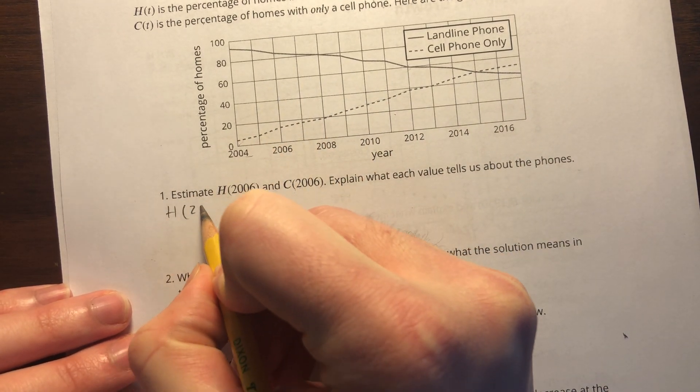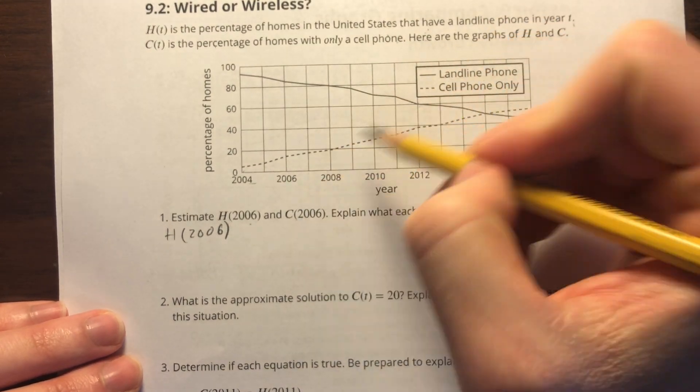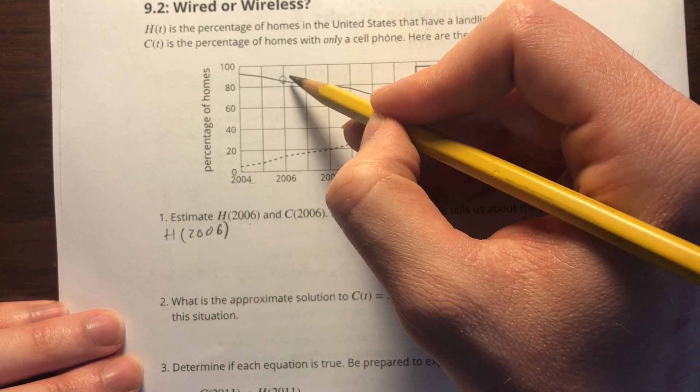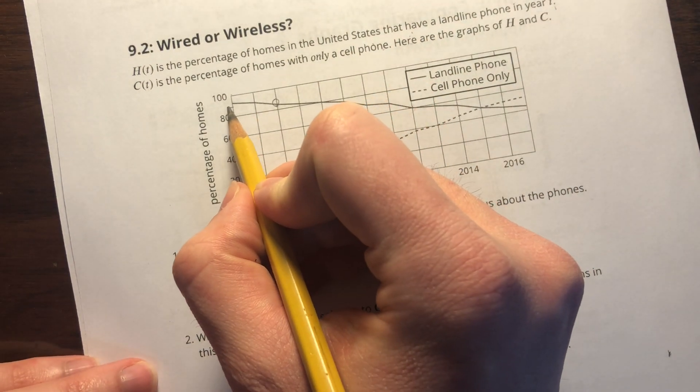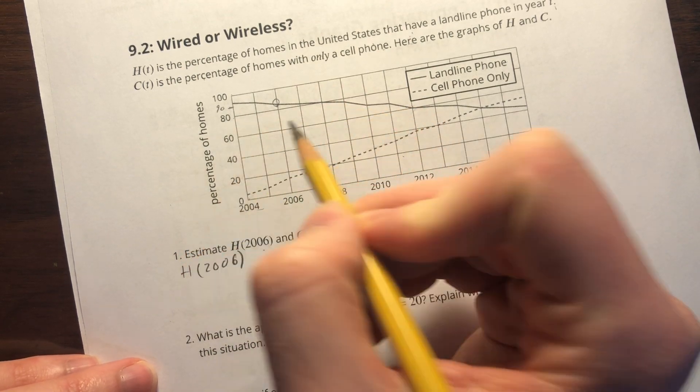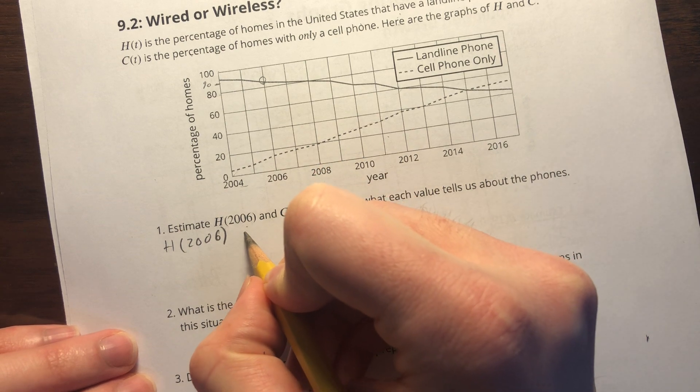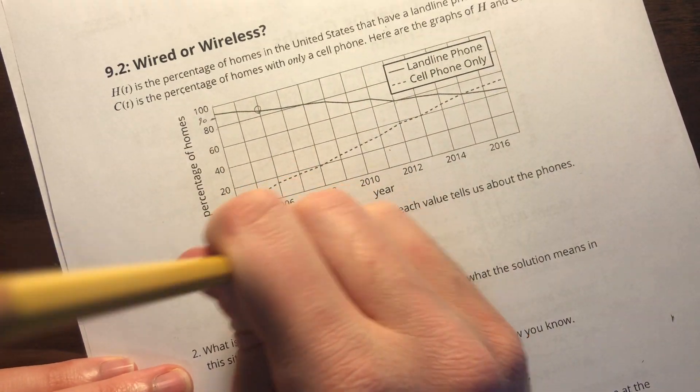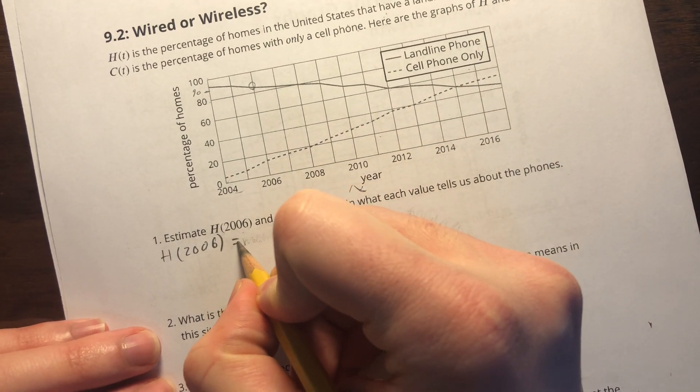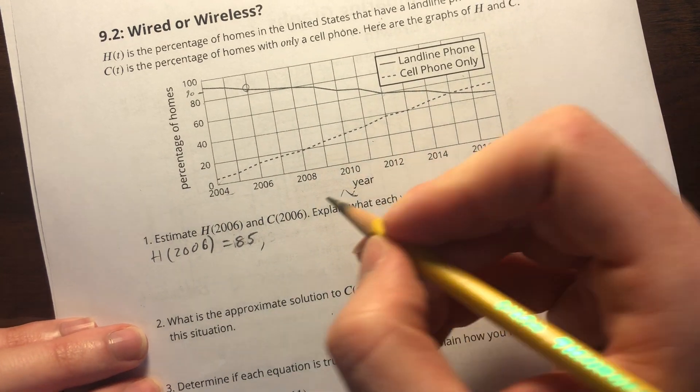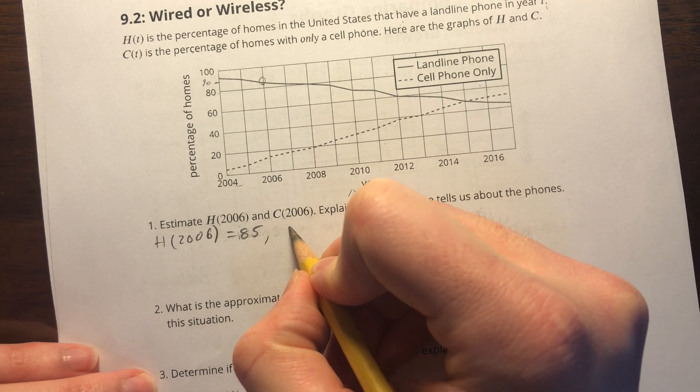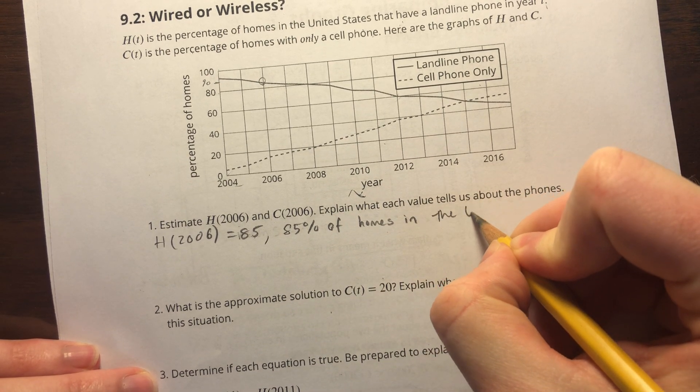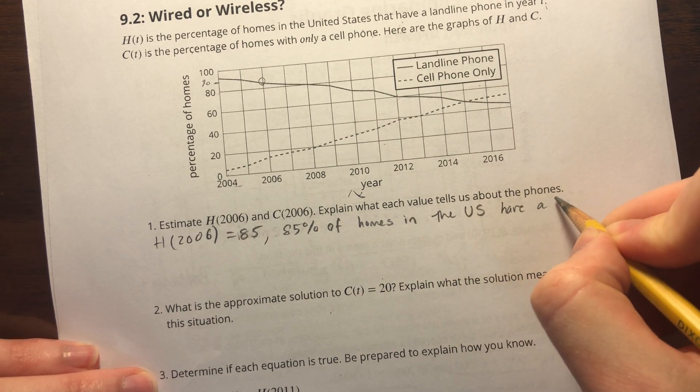For H(2006), if I look at that, that is the solid line, and that looks to be about—it's between 80 and 100. Midway is 90, so that looks like it's about midway between 80 and 90. So H(2006) equals 85, and that means that 85% of homes in the U.S. have a landline.